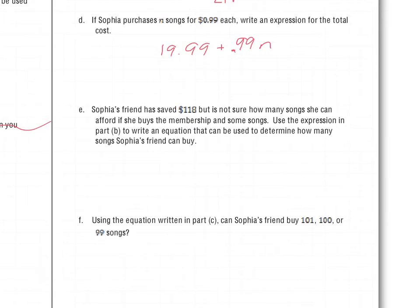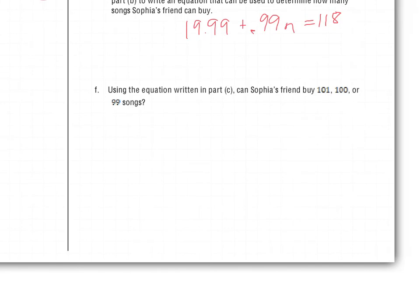Sophia's friend saved $118 and is not sure how many songs she can afford. If she buys the membership and some songs, use the expression to write an equation to determine how many songs she can buy. We know her total is $118, so we set the equation: $19.99 plus $0.99N equals $118.